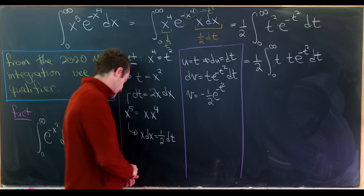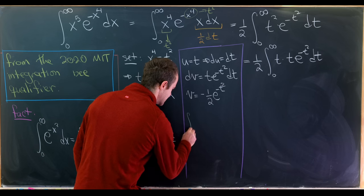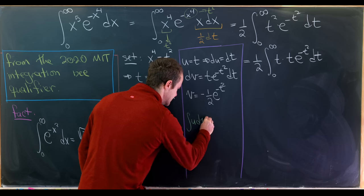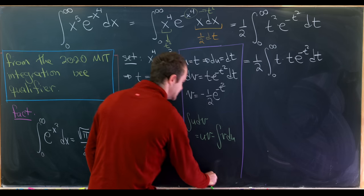Okay, now we can use our standard integration by parts formula. Let's recall what that is. We have the integral of u dv is equal to u times v minus the integral of v du.